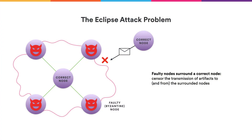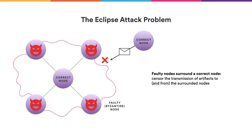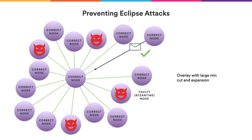There are several problems to avoid when considering Byzantine nodes. The first is the Eclipse attack, where all peers of a certain node happen to be malicious or faulty. The faulty nodes can collude and select which artifacts the correct node sees, practically disconnecting it from the rest of the network. Because we validate the authenticity of messages, malicious nodes cannot trick an honest node with spoofed messages, but the connectivity problem remains. To avoid that, we must use overlays with large enough min-cut and expansion so that for every node at least one neighbor is correct. Each node uses a different overlay so that eventually all nodes are connected.